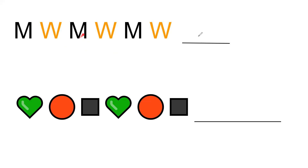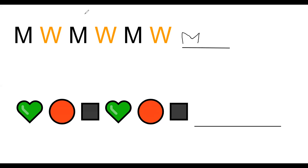So I will write M here in black, because M is black. Now what is coming after M? It is a W. Going back to the start — M, W. So I will write orange W here like this.